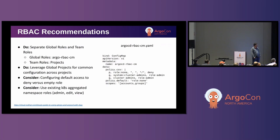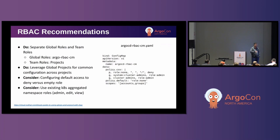Another option I'm interested in hearing feedback on is using the existing Kubernetes aggregated namespace roles — admin, edit, view — for the Argo CD service account for the application controller. In OpenShift, when new operators or resources are deployed, those roles automatically get updated, which reduces maintenance burden. Instead of manually updating cluster role bindings or namespace role bindings whenever new things come on board, those updates are handled automatically. I'd be interested in hearing whether others are doing this or have found problems with it.